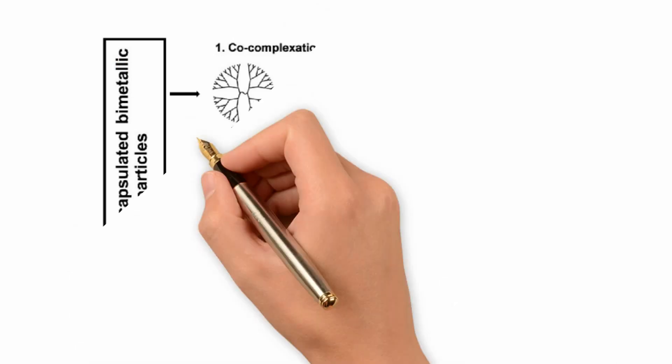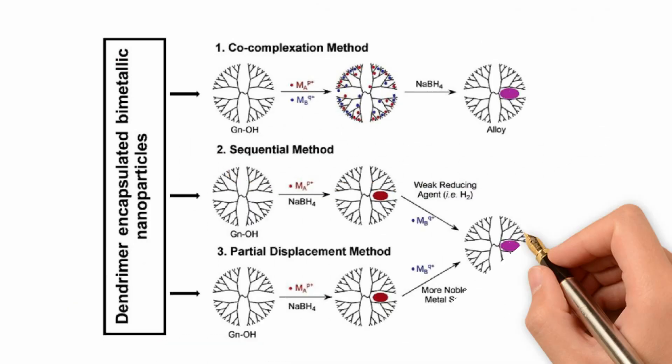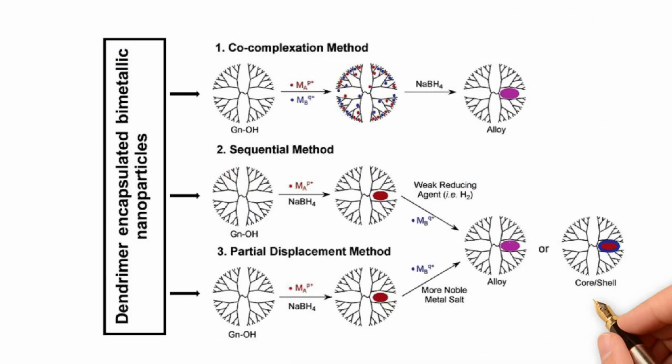Special interest in preparing bimetallic nanoparticles has been shown due to modulated electronic properties, enhanced conductivity, synergy, and interesting catalytic behavior. The three most common methods to prepare bimetallic nanoparticles within dendrimers are the co-complexation method, sequential method, and partial method.